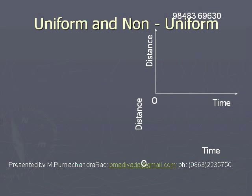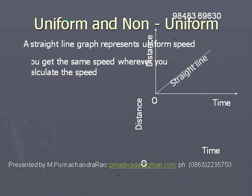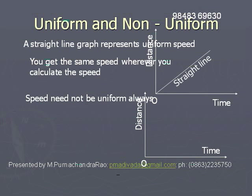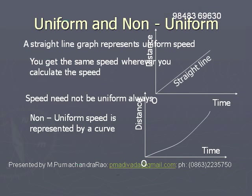In the previous graph, we took a straight line. The straight line relationship between time and distance represents uniform speed. Wherever you calculate the speed, you will get the same value from the graph. However, the speed need not always be uniform. Sometimes we will get non-uniform speed. When the speed is not uniform, we don't get a straight line graph between time and distance — it will be a curve.